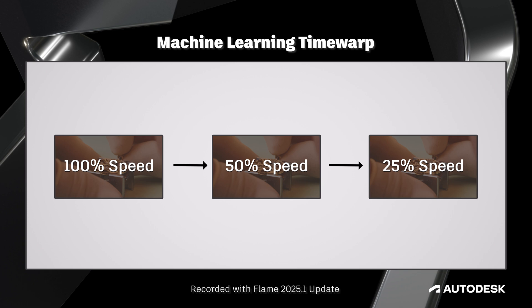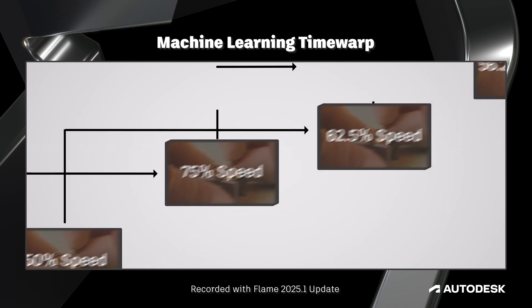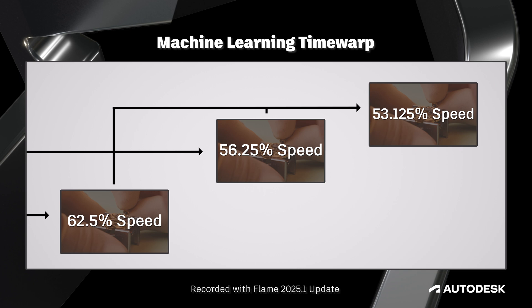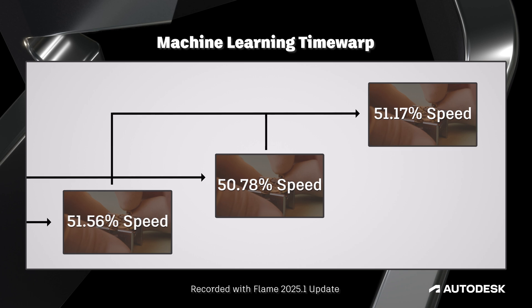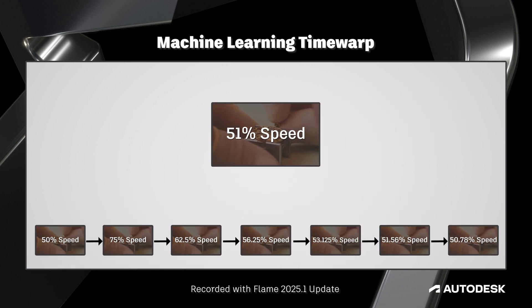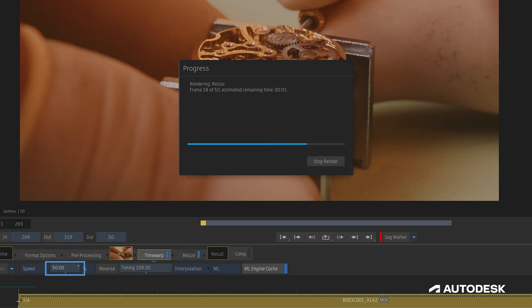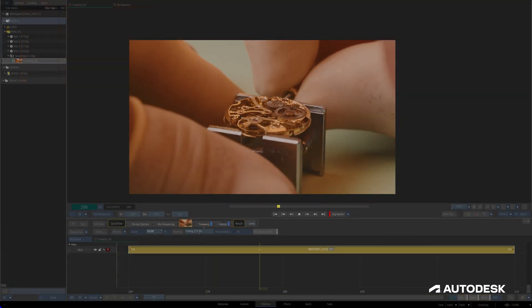Getting to a Time Warp of, for example, 51% — even though it might seem like it's just going 1% faster than a 50% Time Warp — actually involves going from 50% to 75% to 62.5% to 56.25% to 53.125% to 51.56% to 50.78% and finally to 51.17%, which for argument's sake rounds nicely to 51%. However long that initial 50% Time Warp would take, a 51% Time Warp would take roughly eight times longer to calculate.